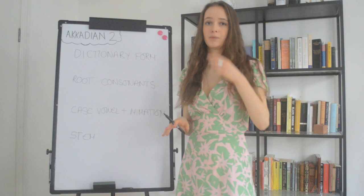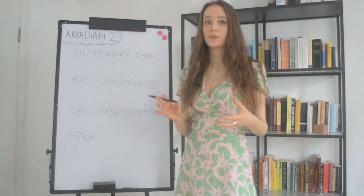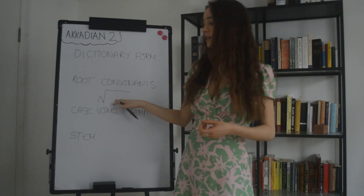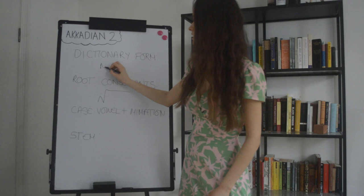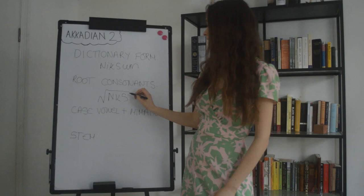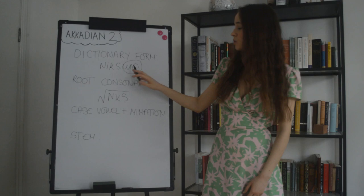Now we move on to how nouns are formed in Akkadian. All words in Akkadian — adjectives, nouns, verbs, participles — are formed by applying regular patterns to a three-root consonant base. We mark the three-root consonant base with a square root sign to show that what is contained within it are the three root consonants. For example, the word for cutting, 'niksum,' has root consonants N, K, and S. The grammatical content is based on the ending — the U and the M — which we call the case vowel and the mimation.